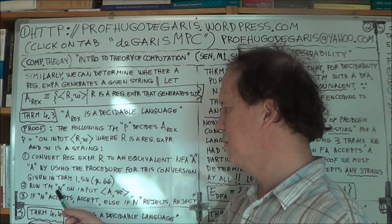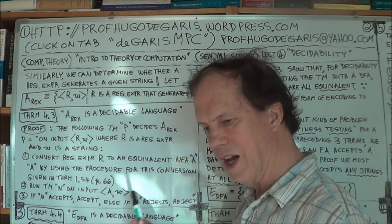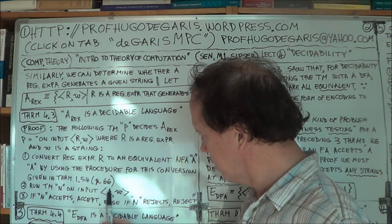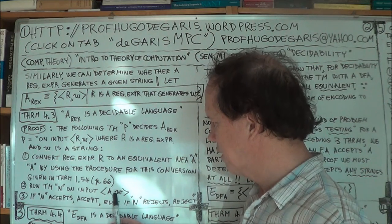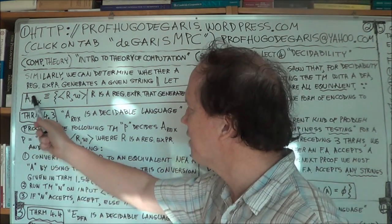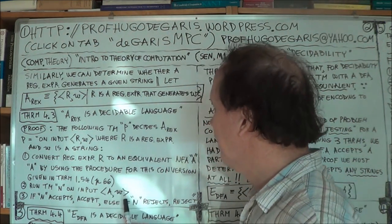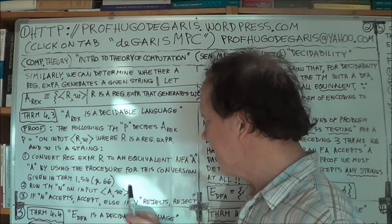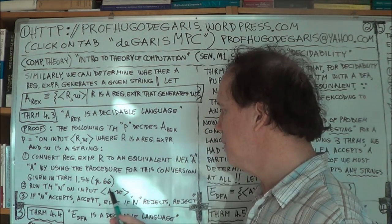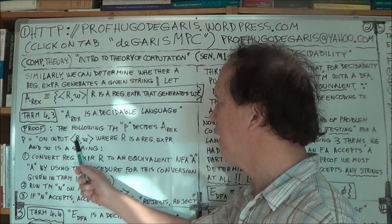This belongs to the Turing machine — whether it belongs to the language ANFA. If it does, then you know that machine A has a language like ANFA. So if this Turing machine N accepts this, that means A does accept W, and if A accepts W, then R generates W.